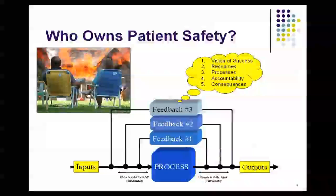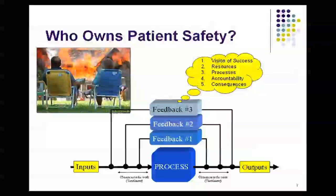When it comes to who owns patient safety, one of the problems we have is that it's owned by everybody, and as a result it can often be owned by no one. In a good Lean culture, we have feedback loops that take the process and the information, measure its outputs, and provide feedback to the inputs to keep it in control. Without a Lean culture, we focus on the process only and don't do well at designing feedback loops.